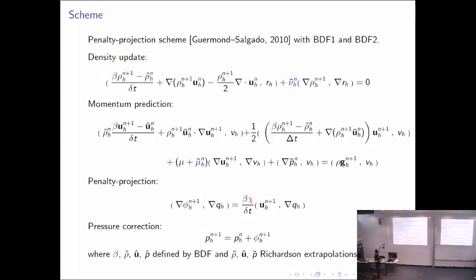We chose to use a splitting scheme devised by Guermond and Salgado. It's basically the same scheme as any projection and time stepping scheme: first density update, then momentum prediction, then penalty projection. We use penalty projection because we don't enforce strict divergence-free constraints to relax the fact that the density is not constant. We introduce this parameter rho_min which is defined as the minimum density, and Guermond-Salgado proved that the error estimates are adequate, then finally a pressure correction.